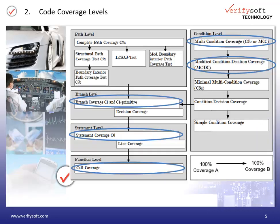Now let's have a look at the different coverage levels. On the left-hand side at the bottom we have the function level. 100% function or call coverage is achieved when each function has been executed at least one time. This is a very low coverage level. On top of this we see statement coverage. To achieve 100% statement coverage, all different statements within the function need to be tested.